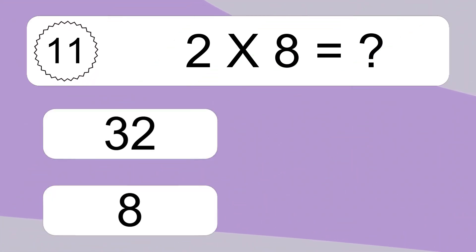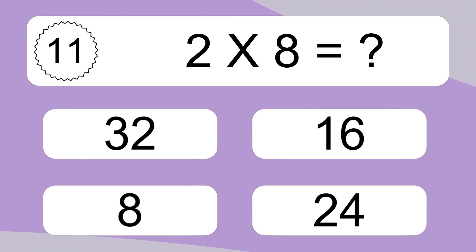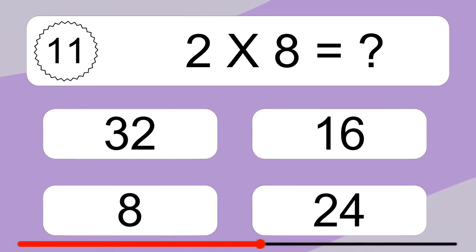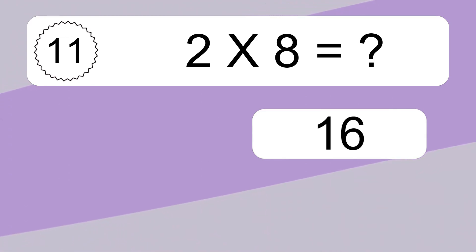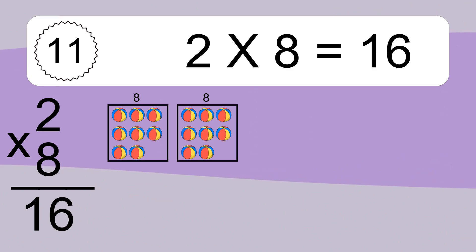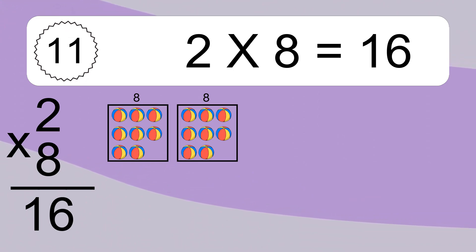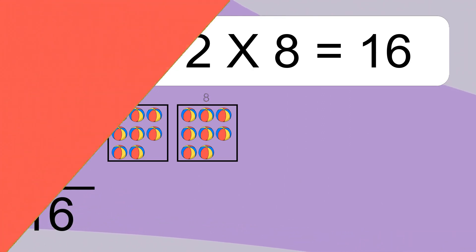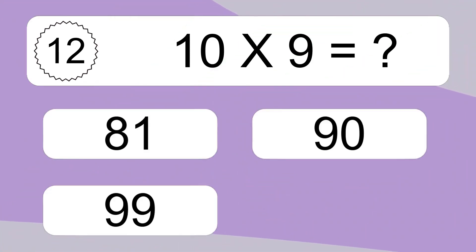2 times 8 equals what? 2 times 8 equals 16. We have 2 boxes, and each box has 8 colorful balls inside. If you count all the balls in all the boxes together, you will have 2 times 8 balls. This equals 16 balls.